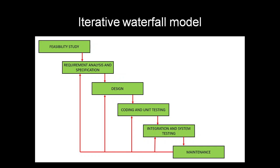This feedback is important because when we do some coding and perform unit testing, we may find that some error has occurred. So we have to change the design. We will go back to the design phase and correct those errors. There is a feedback from a phase to its preceding phase so that such errors can be corrected. That is why there is a feedback path for correcting these errors.